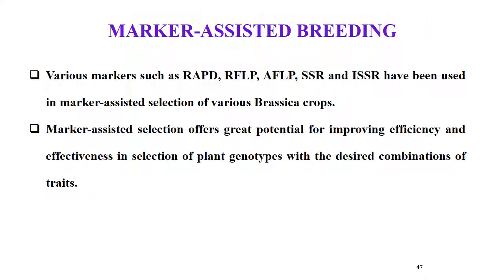Coming to marker-assisted breeding: various markers like RAPD, RFLP, AFLP, SSR, and ISSR have been used in marker-assisted selection of Brassica crops. This offers great potential for improving efficiency and effectiveness in selection of plant genotypes with desired combination of traits.